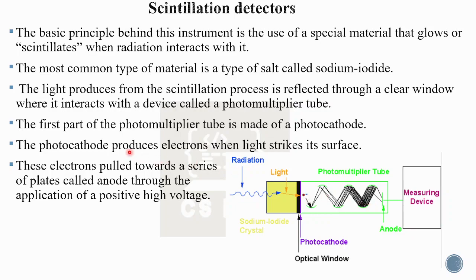The first part of the photomultiplier tube is the photocathode. The photocathode produces electrons when light strikes its surface. This light enters through the optical window in the photomultiplier tube, strikes the photocathode, and generates electrons. These electrons are then directed through a series of plates called anodes, and a positive voltage is applied to the anodes.